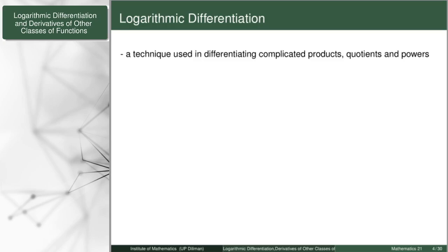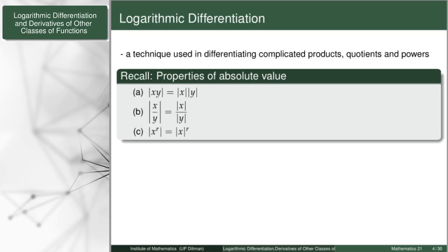The first step involves the absolute value. It takes note that the absolute value has a relationship between products, quotients, and powers — namely, it distributes over these operations. In particular, the absolute value of a product is the product of the absolute values, and the absolute value of a quotient is equal to the quotient of the absolute values.